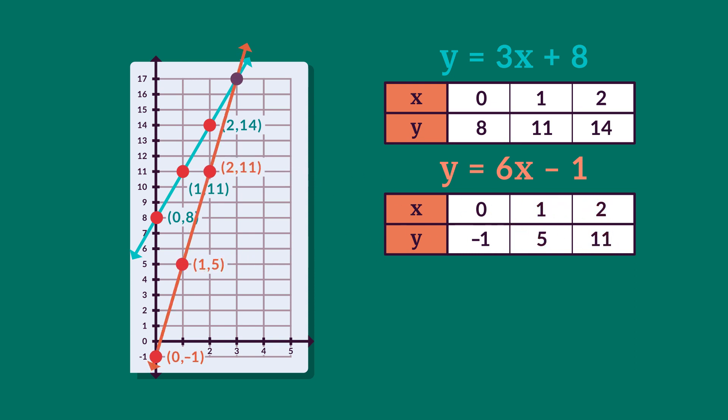And the coordinates for the point where the lines overlap is (3, 17). So both equations are true when x equals 3 and y equals 17.